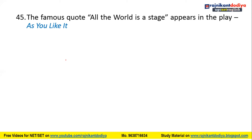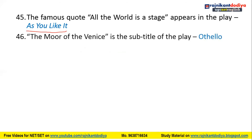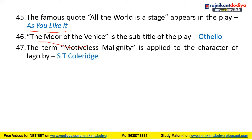The famous quote 'All the world's a stage' appears in the play As You Like It. The Moor of Venice is the subtitle of the play Othello. The term 'motiveless malignity' is applied to the character of Iago by S.T. Coleridge — Iago appears in Othello.